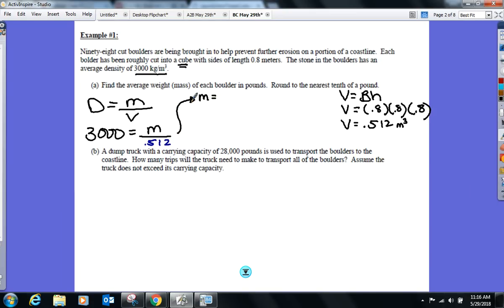Where's that going to be placed in my density formula? For volume—0.512. Go ahead, find the mass of one boulder in kilograms, because that's what your density is in. Cross multiply. We're not ready to round anything yet. Anybody got the kilogram mass of the boulder? 1536. One boulder is 1536 kilograms, but we need it in pounds.